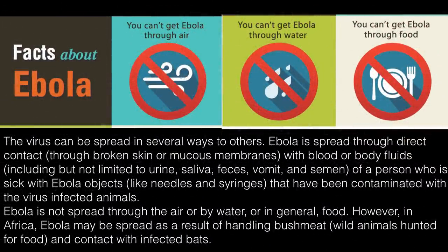The virus can spread to others in several ways. Ebola is spread through direct contact — through broken skin or mucous membranes — with blood or body fluids including urine, saliva, feces, vomit, and semen of a person who is sick with Ebola, or objects like needles and syringes contaminated with the virus, and infected animals. Ebola is not spread through air, water, or in general food. However, in Africa, Ebola may be spread through handling bushmeat — wild animals hunted for food — and contact with infected bats.